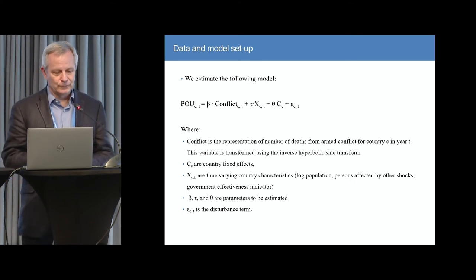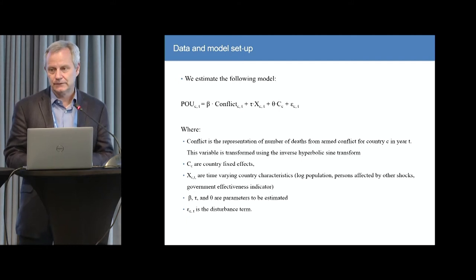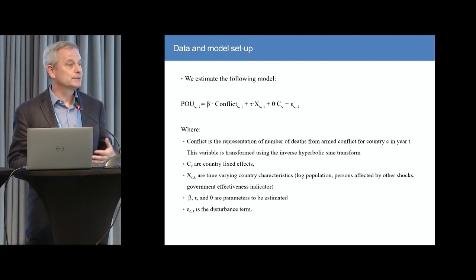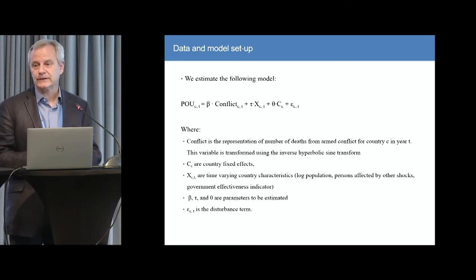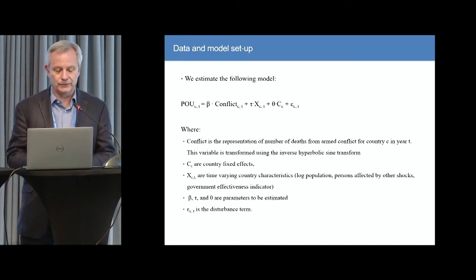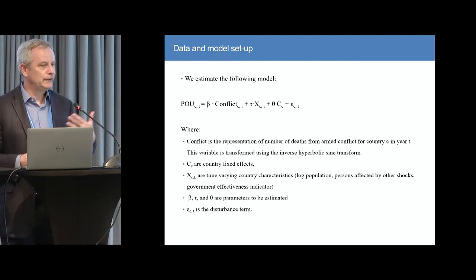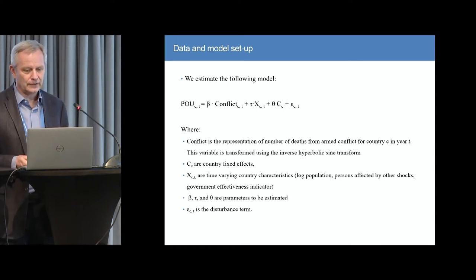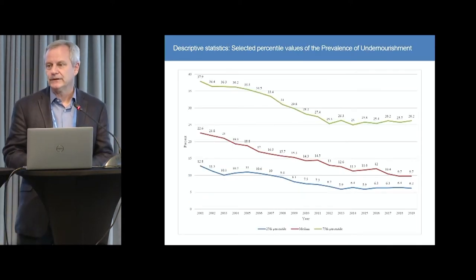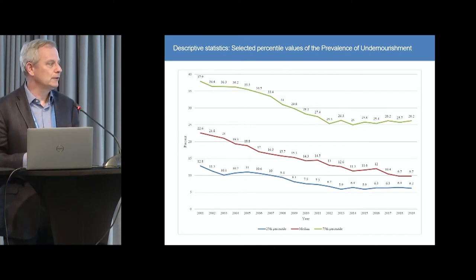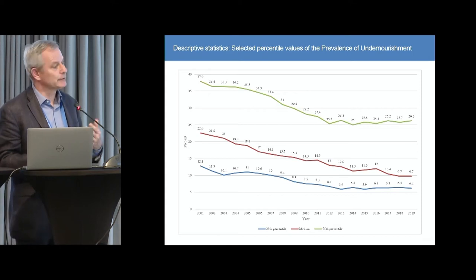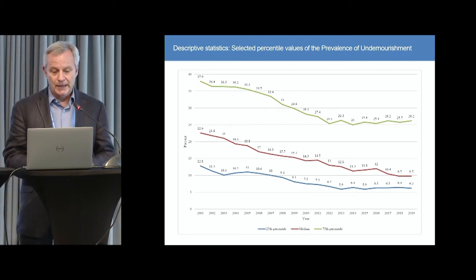In our data and model setup, we estimate a simple model where hunger is the dependent variable and conflict is the right-hand-side variable, controlling at various points for country fixed effects and time-varying country characteristics. To give you a feel for the data: if we look at trends in the prevalence of undernourishment, you see a red line which is the median prevalence of hunger in this sample — it declines over the period available to us. That's also true at the 25th percentile.